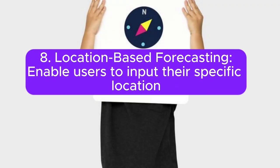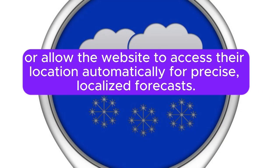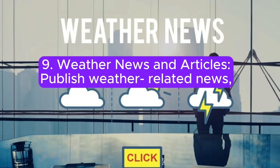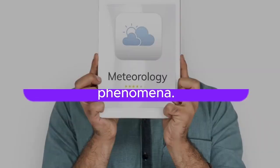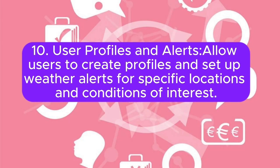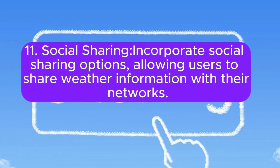8. Location-based forecasts: allow users to input their specific location, or allow the website to access their location automatically for precise, localized forecasts. 9. Weather news and articles: publish weather-related news, articles, and educational content to keep users informed about meteorological events and phenomena. 10. User profiles and alerts: allow users to create profiles and set up weather alerts for specific locations and conditions of interest. 11. Social sharing: incorporate social sharing options, allowing users to share weather information with their networks.